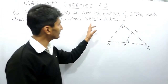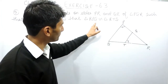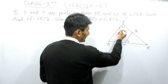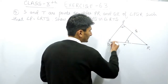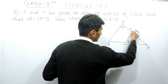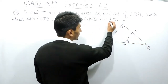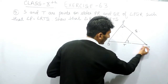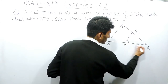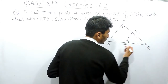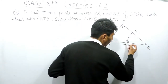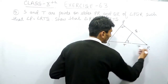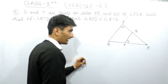So you have to prove that triangle RPQ — which is the complete triangle PQR — is similar to triangle RTS, which is this smaller one. So you have to prove that this smaller triangle is similar to this bigger triangle.